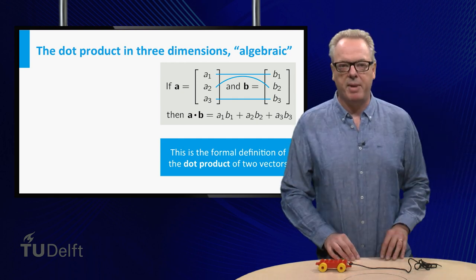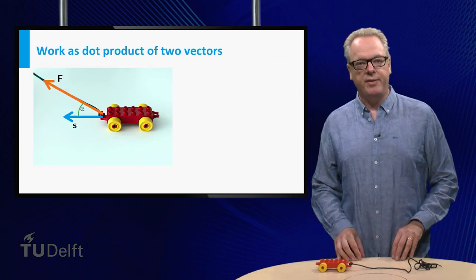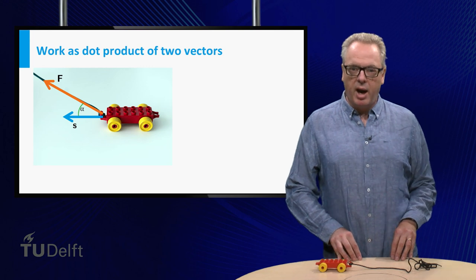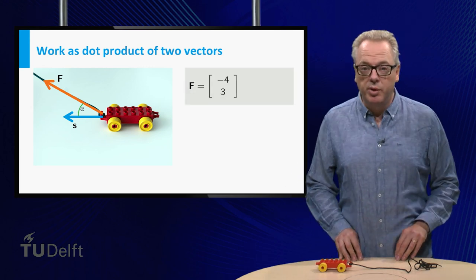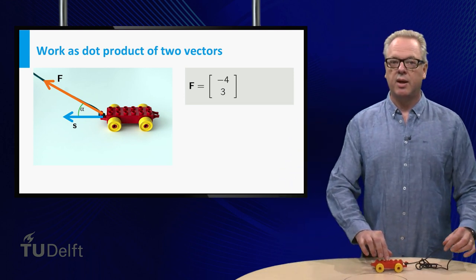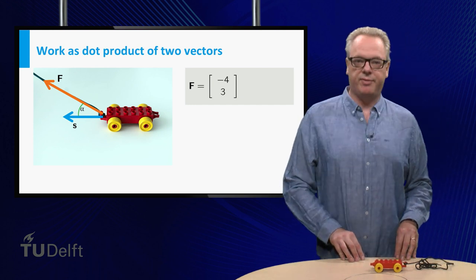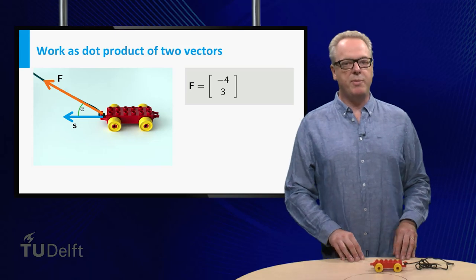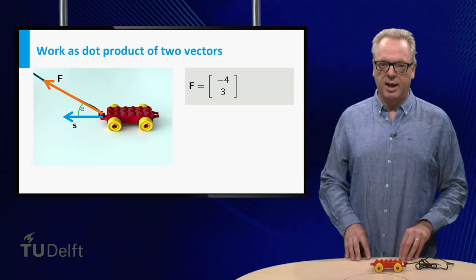Here is a two-dimensional example. Suppose the force F is the vector with components minus four and three. And suppose you have moved the car over a distance of three meters. Since the displacement is horizontal and in negative direction, you can describe this with a vector with components minus three and zero.